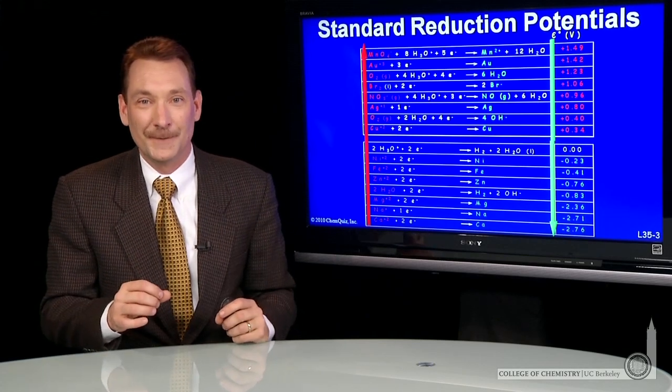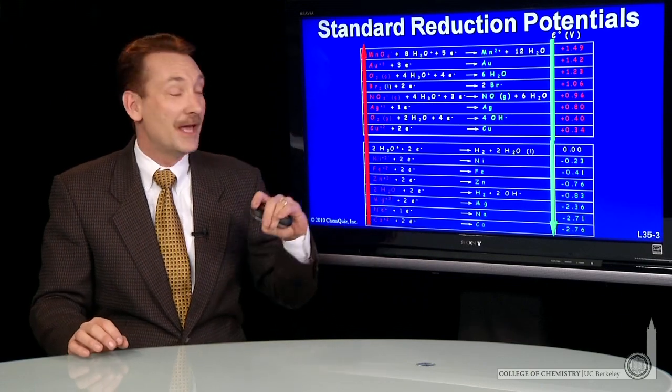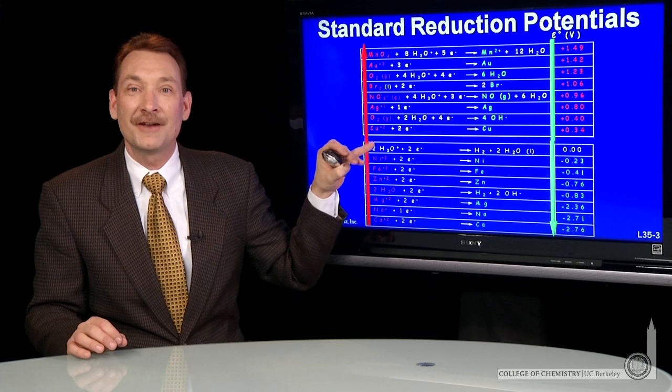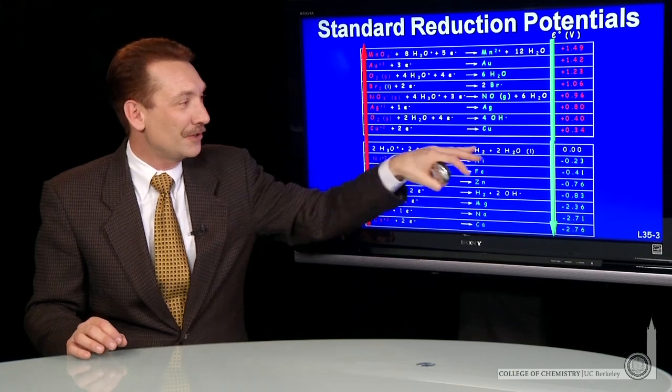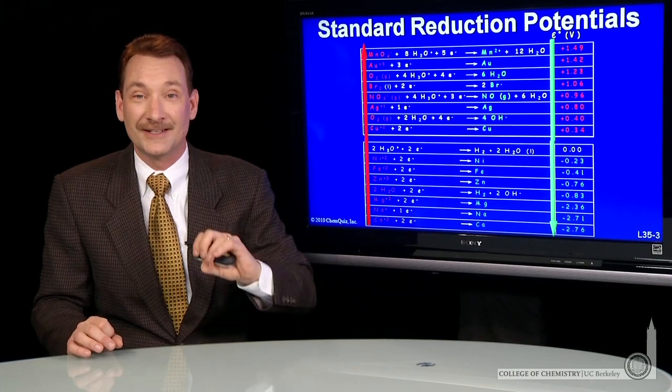In oxidation reduction chemistry, we tabulate standard reduction potentials for half cells. And we tabulate them relative to the standard hydrogen electrode. We arbitrarily set that electrode to zero, and we measure all our potentials relative to that one.